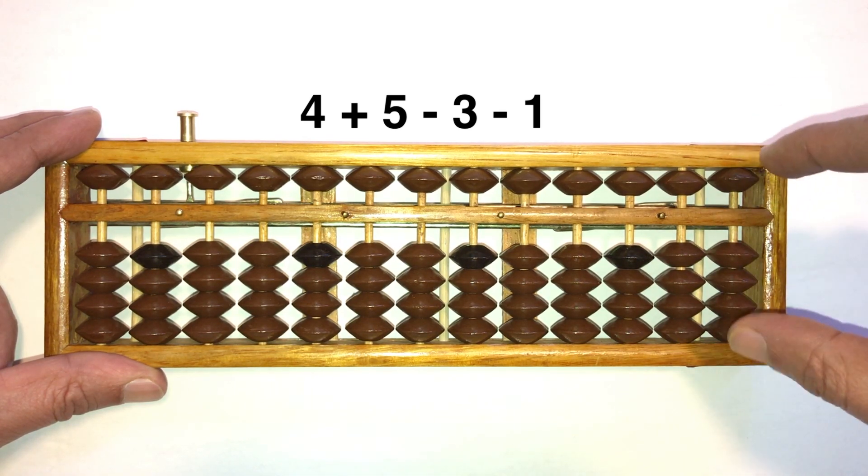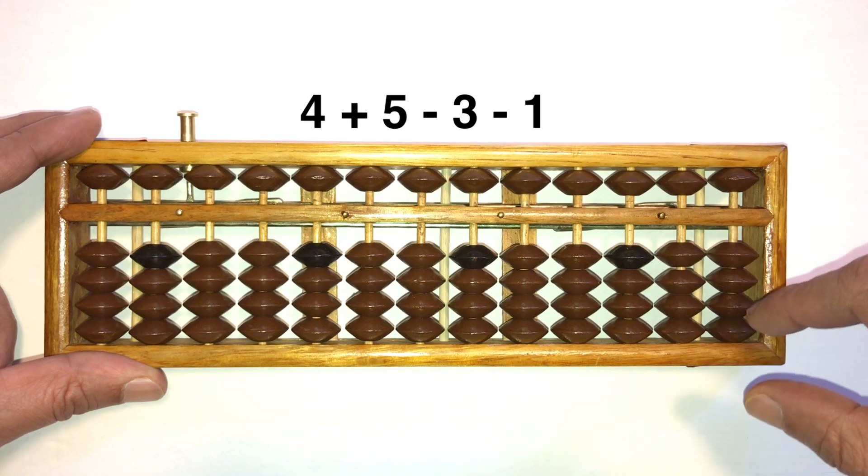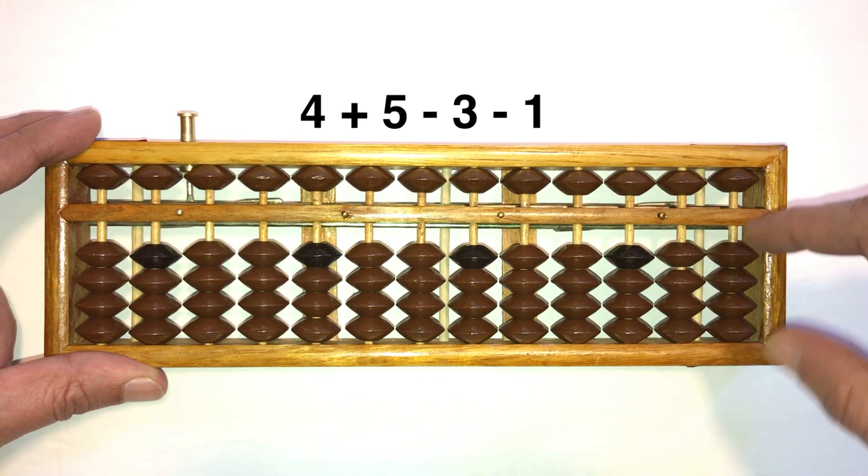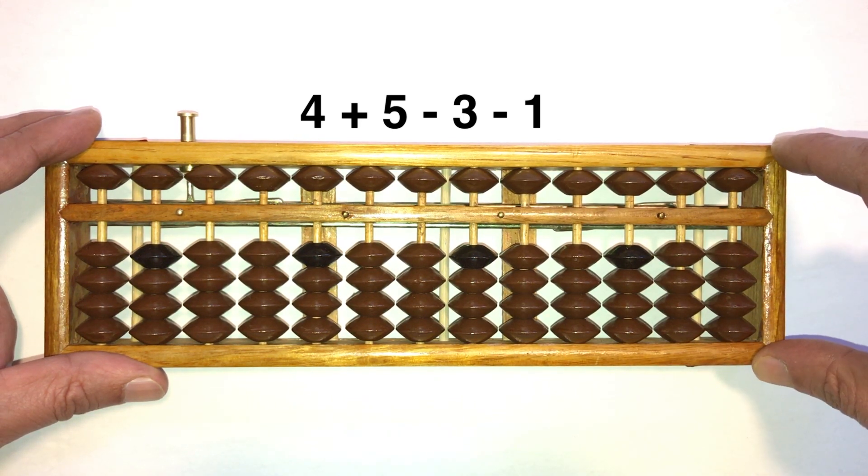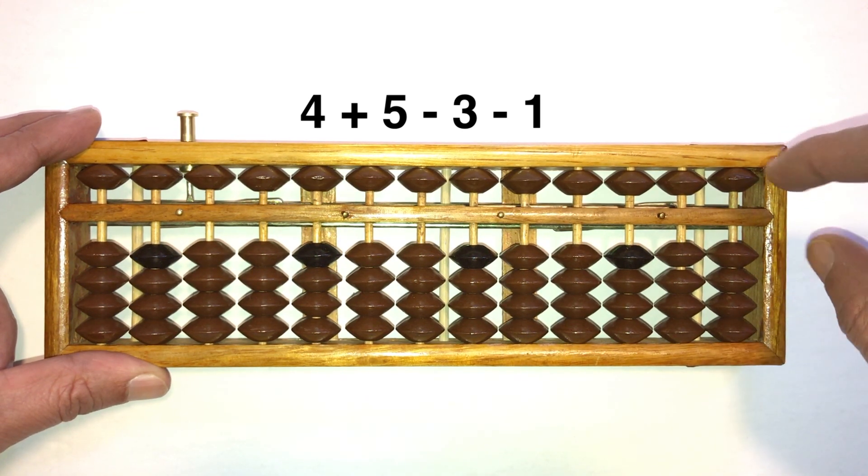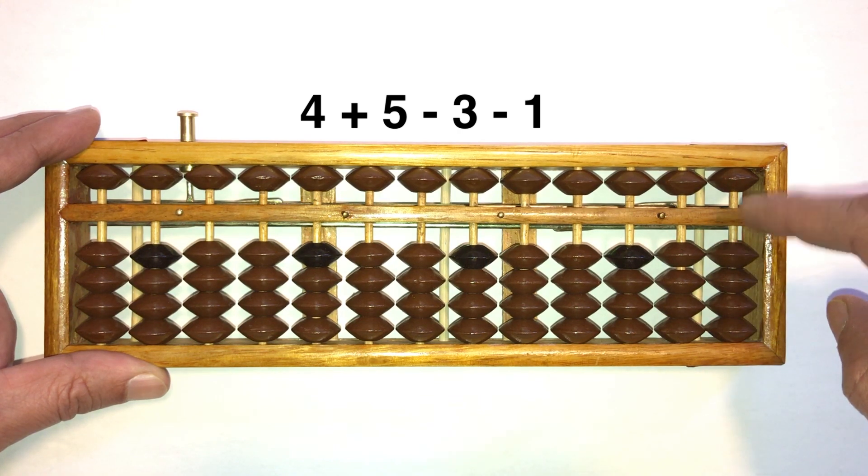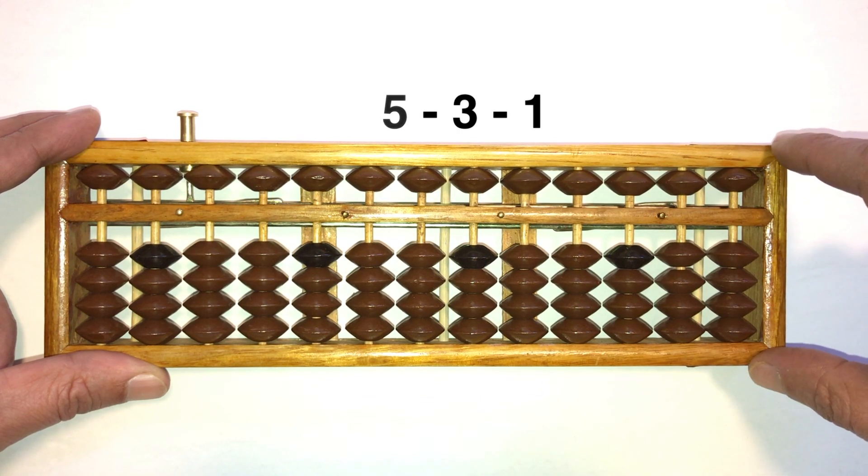4 plus 5, I see a 9 now touching the answer bar. Take away a 3, take away a 1, answer is 5. Okay, let's do that again. 4 plus 5 minus 3 minus 1, answer is 5.